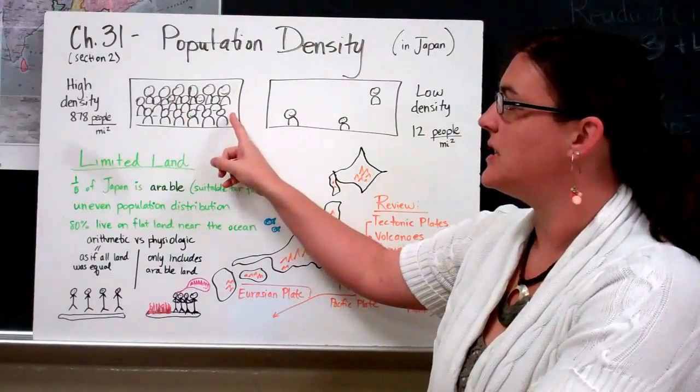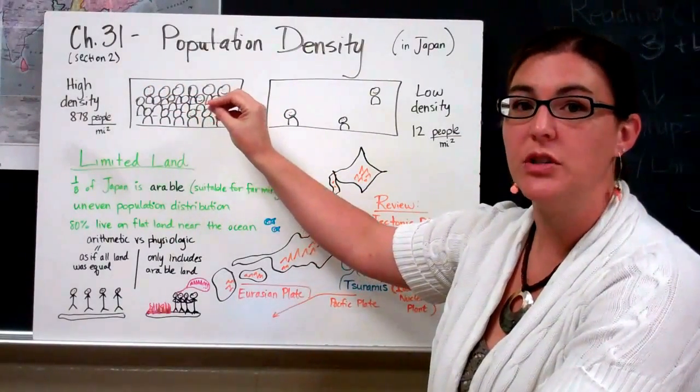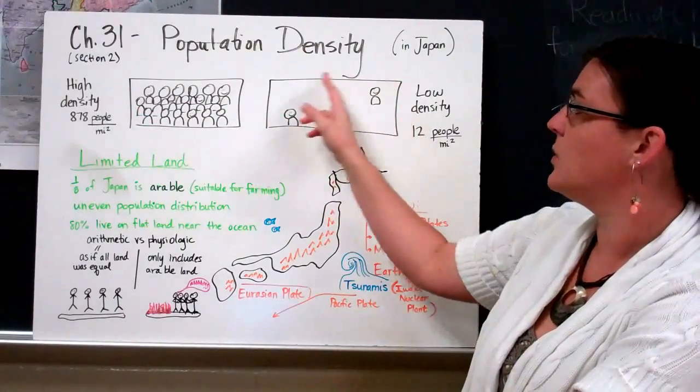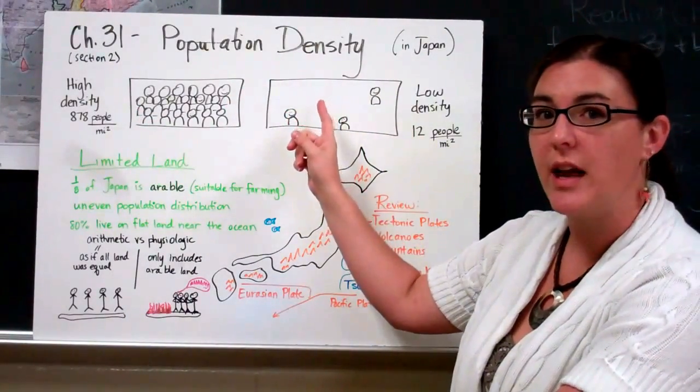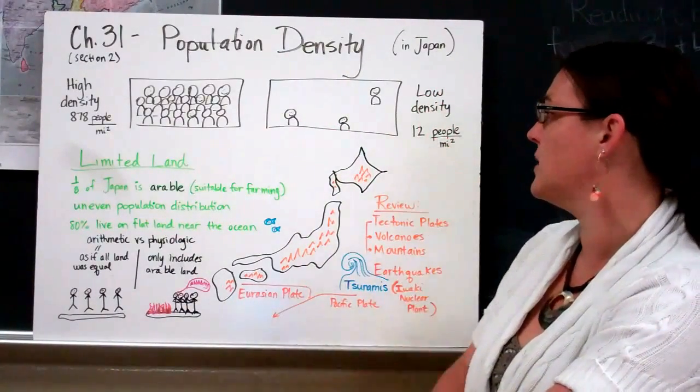A high population density involves a space where a lot of people are squished together. The book talks about 878 people per square mile in Japan. As opposed to a low population density - similar area, less people, more space to spread out. That's a low population density.